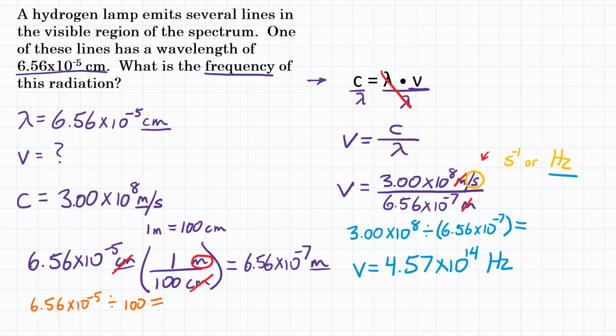Don't forget the times 10 to the 14th power, and definitely make sure your power is to the 14th — if you have a different number, check your calculator, as the order of operations may have been done differently. So the final answer: for a hydrogen lamp emitting radiation with a wavelength of 6.56 times 10 to the negative 5 centimeters, the frequency is 4.57 times 10 to the 14th hertz.